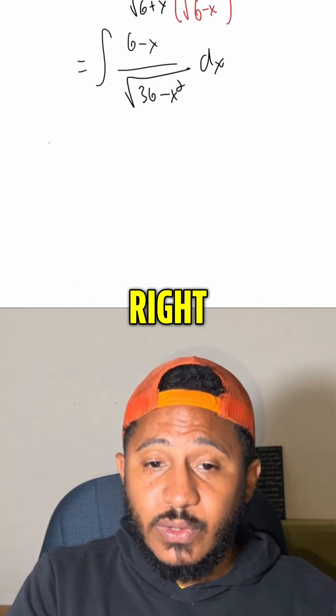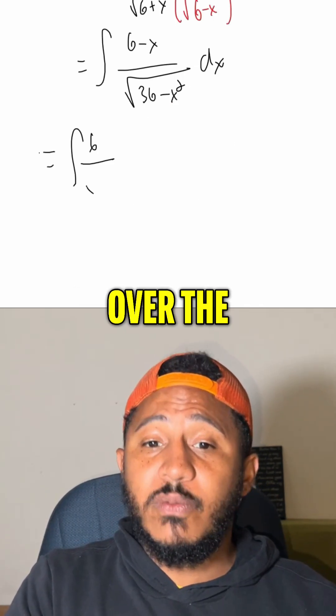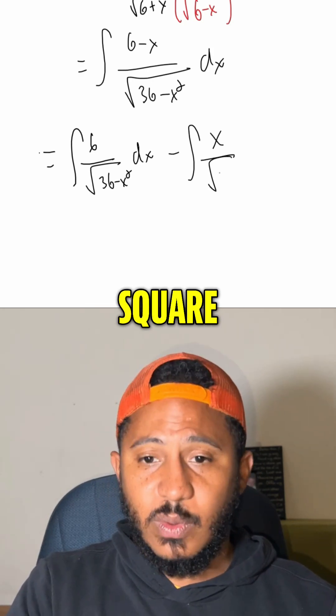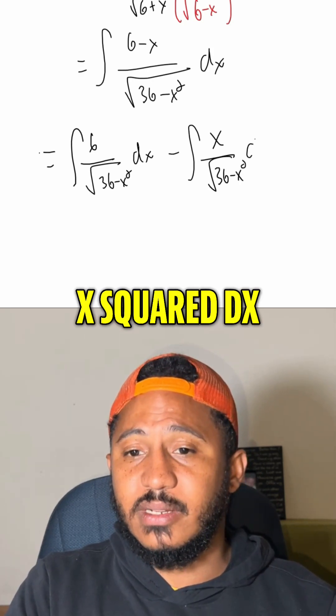Now, we're going to split this up into two separate integrals. And so this becomes the integral of 6 over the square root of 36 minus x squared dx minus the integral of x over the square root of 36 minus x squared dx.